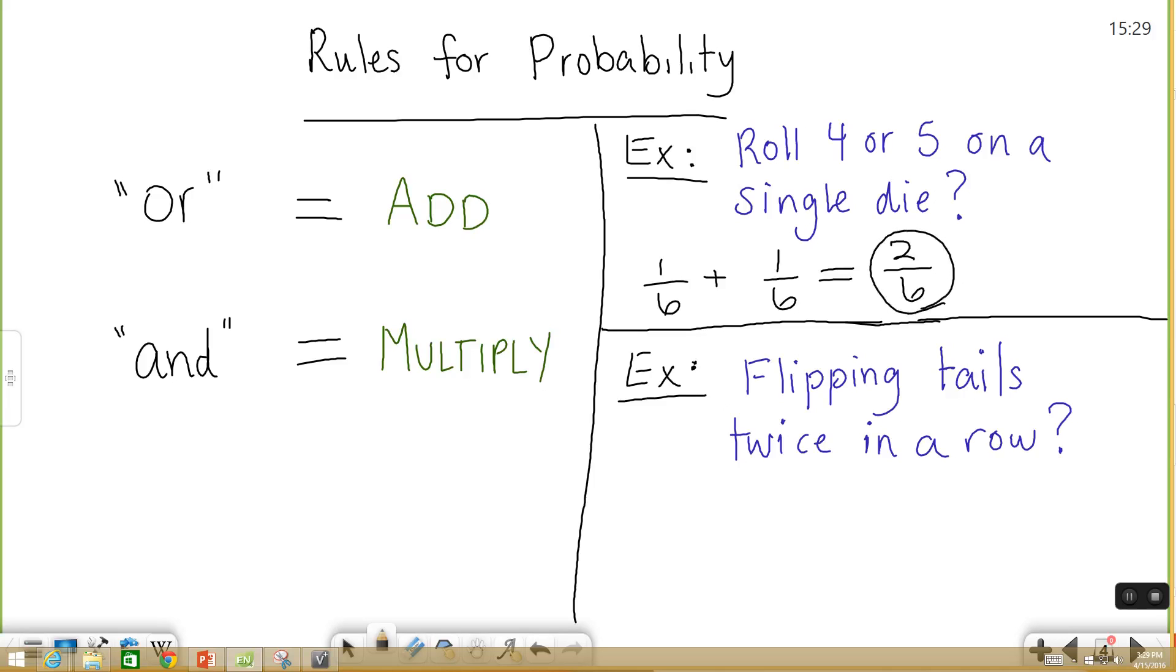If you're looking at the probability of flipping a coin twice, and you want a tails and another tails, you're going to multiply the probabilities together. So flipping a coin, landing on tails, the probability is one half. And then doing it again, the probability is also one half. Multiply them out, you get one fourth.